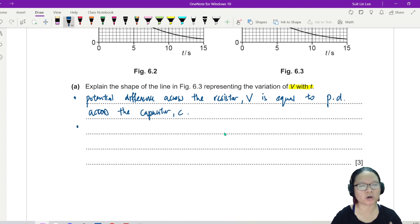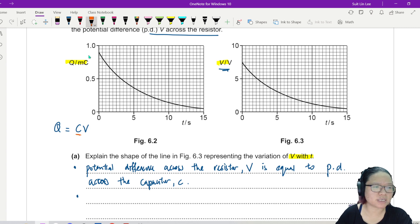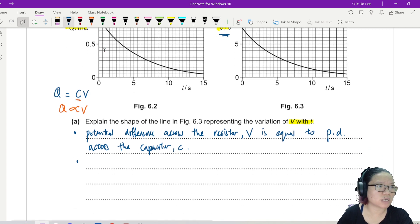So if this Vc graph is like this, it also means that the potential difference of the resistance is also exponential decay. I'll say here that potential difference across the resistor V is equal to potential difference across C.